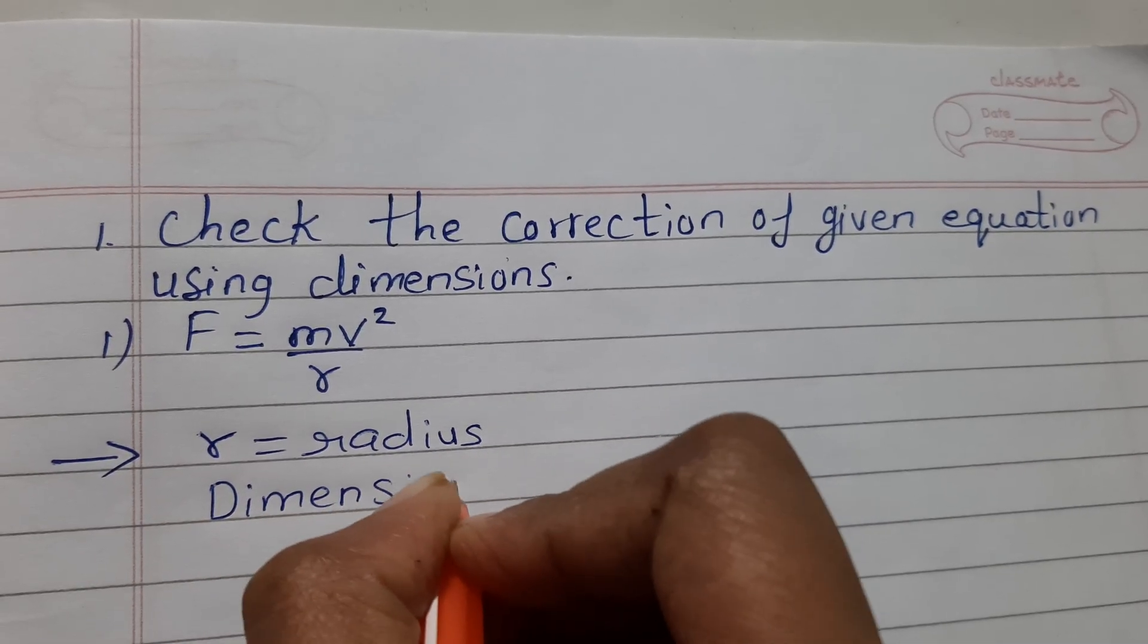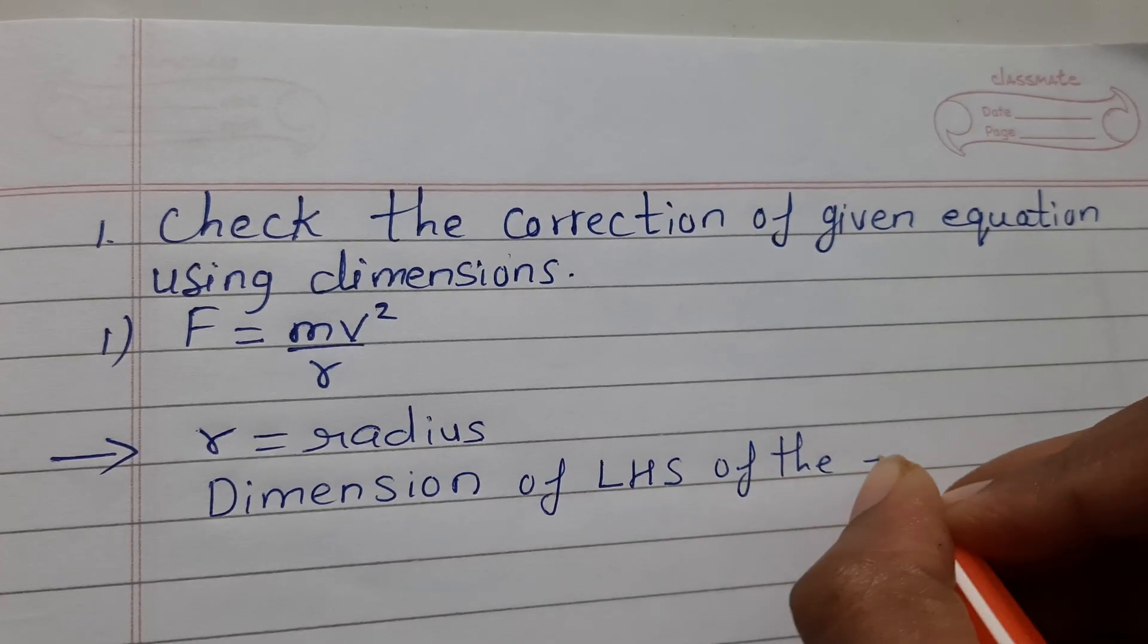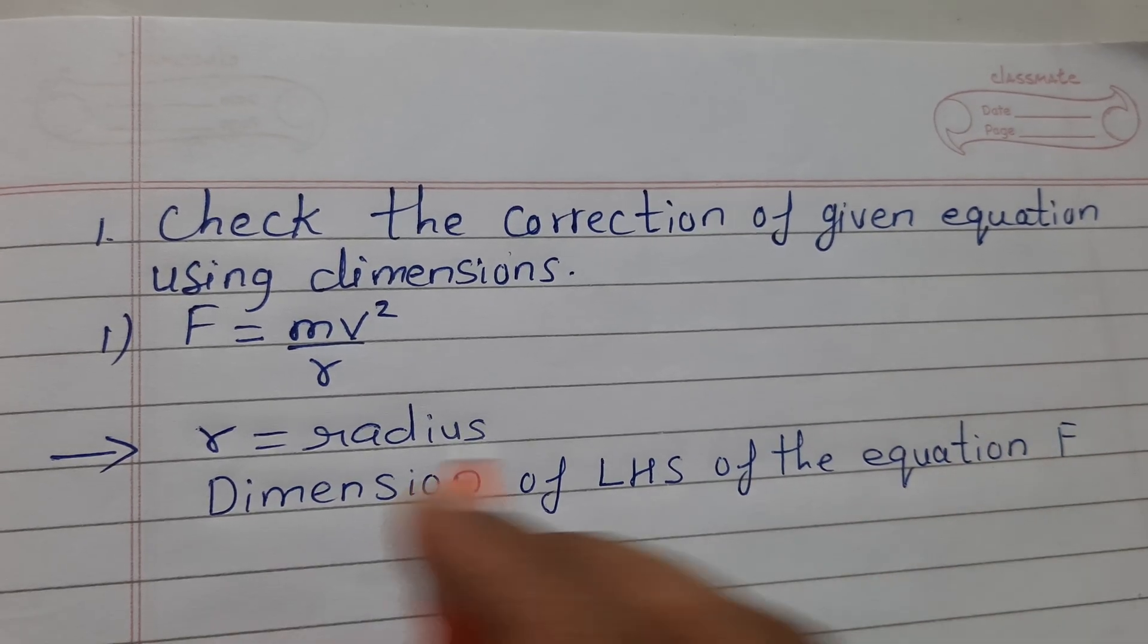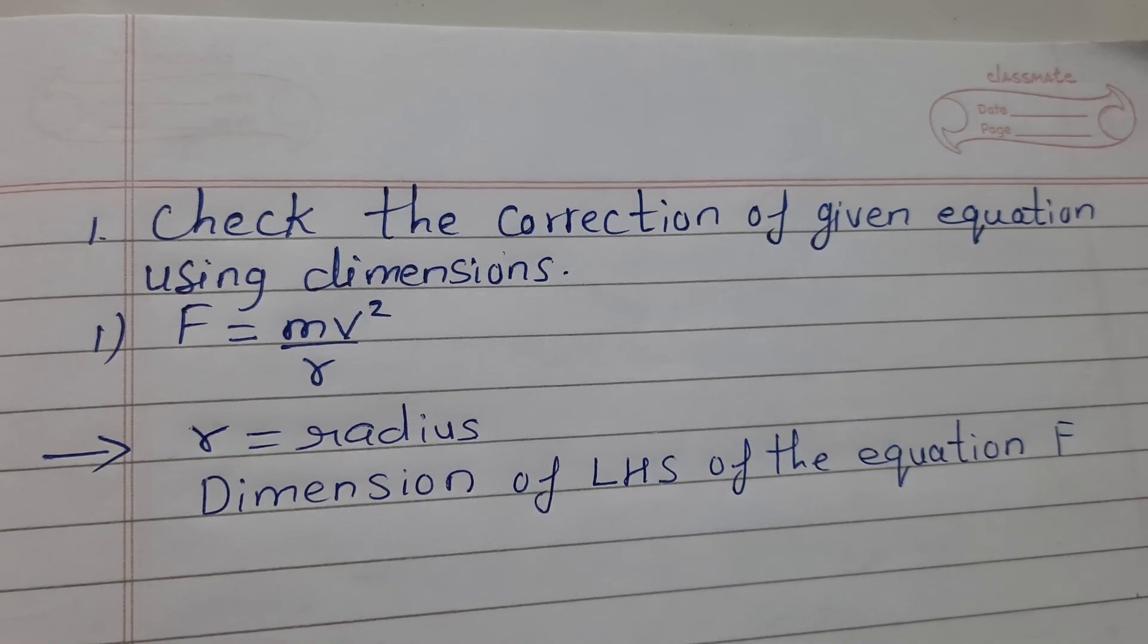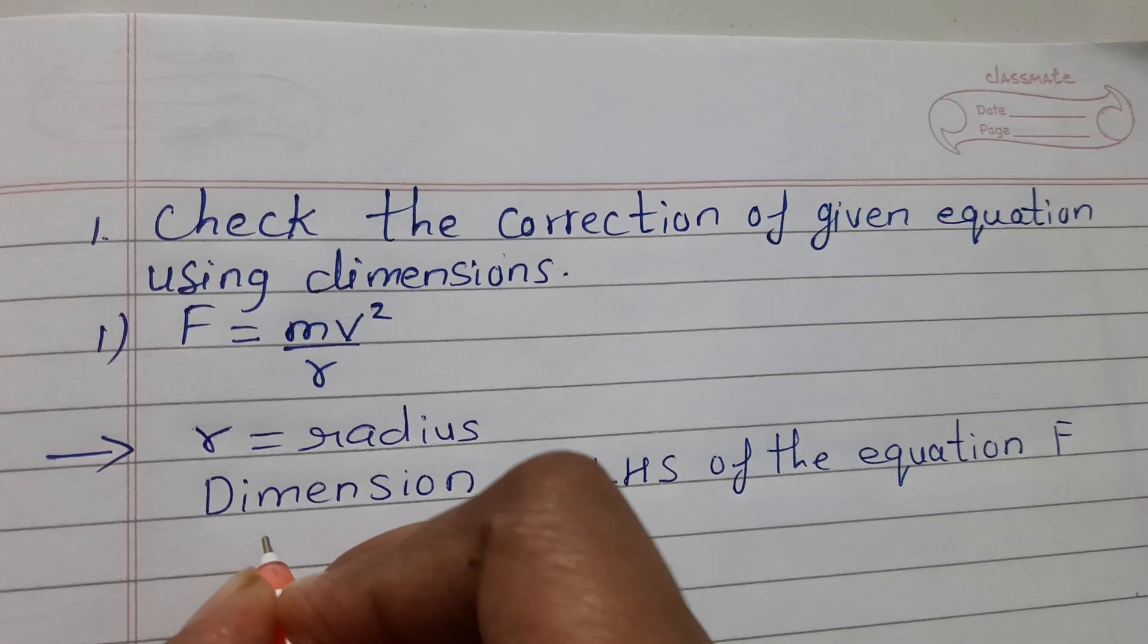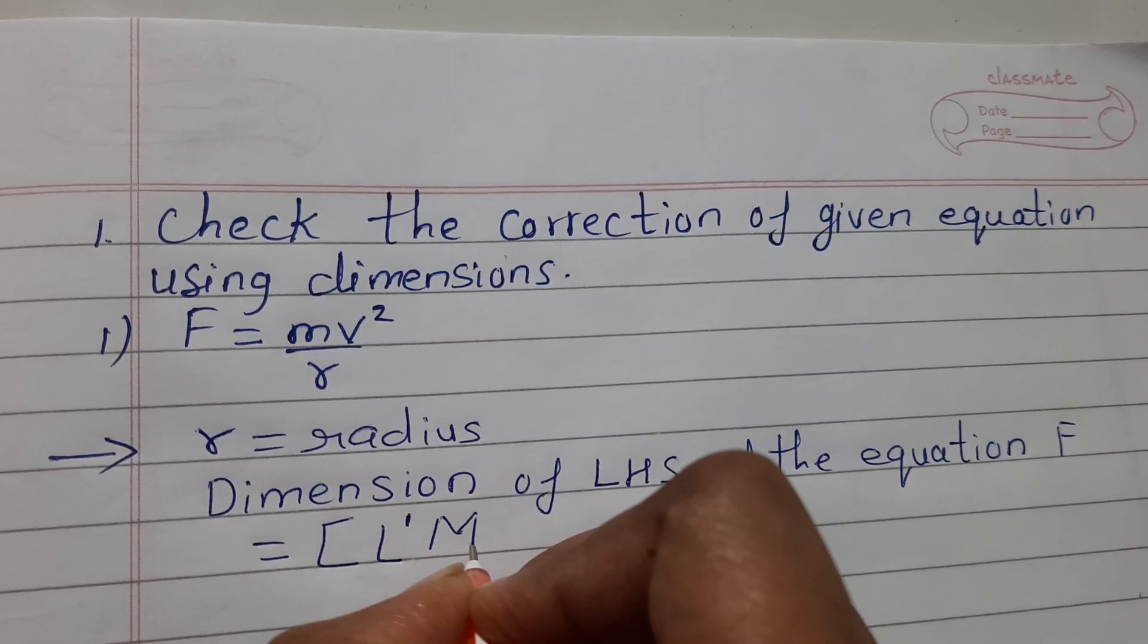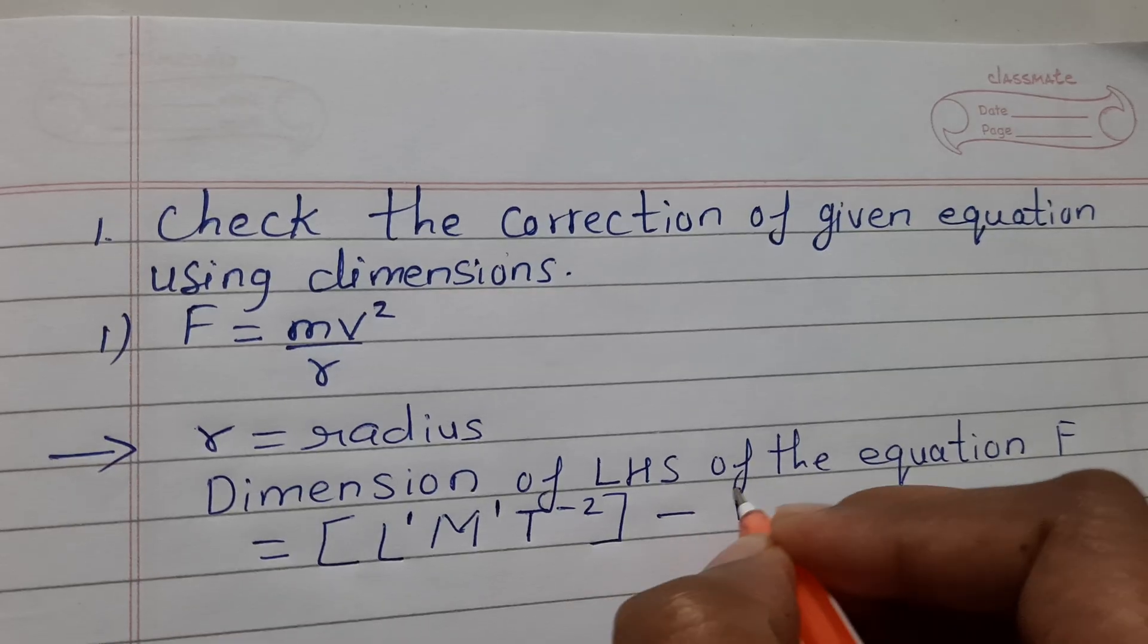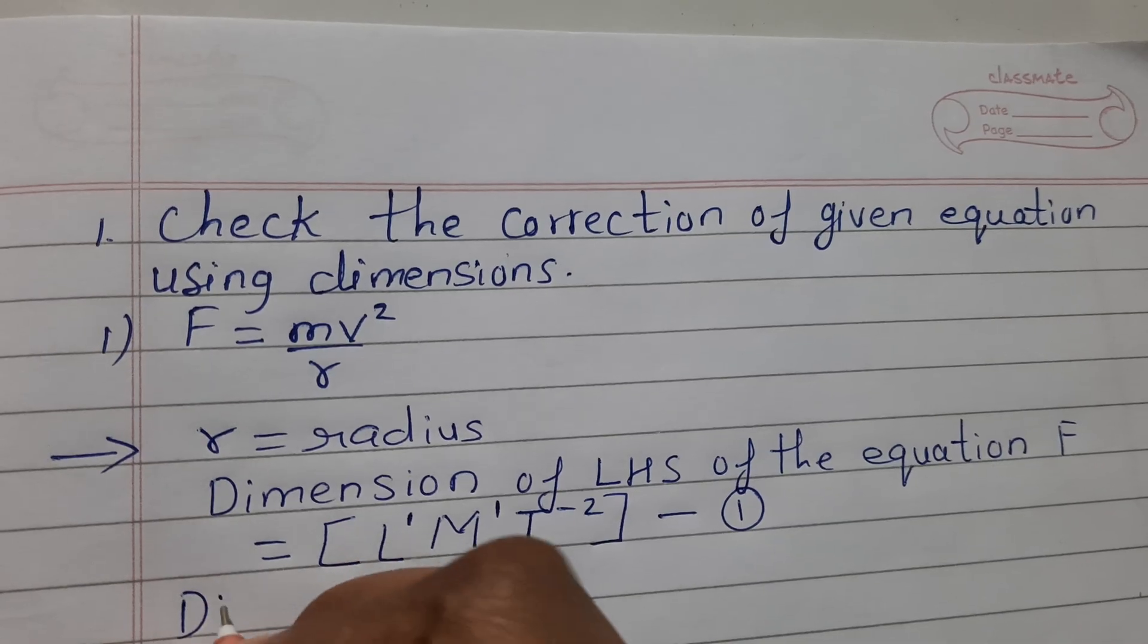Write down dimension of left hand side of the equation F. What is the dimension of this? It is [L¹M¹T⁻²]. Take this as equation 1, length mass time.